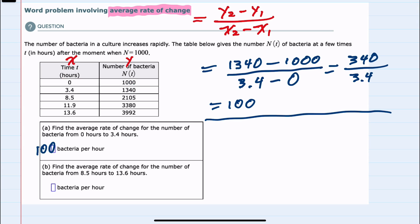We can move to part B, which asks us to do the same process to find the average rate of change between 8.5 hours and 13.6 hours. Again, we have our x1 and x2 values in the left-hand column and our y1 and y2 values in the right-hand column.